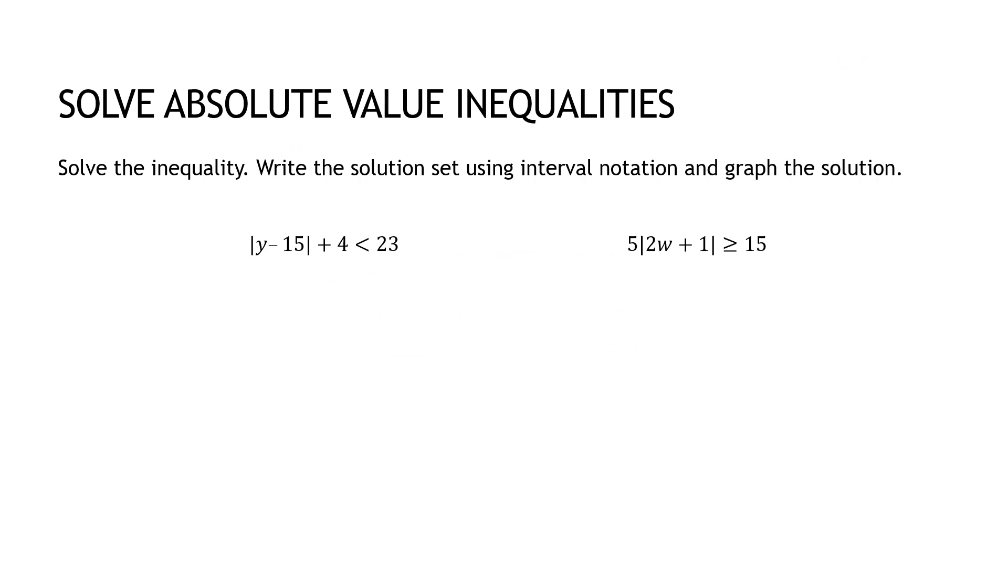So let's take a look at a couple that are obviously a little more difficult than the simple ones we just did. Just as always, I want to get the absolute value by itself before I make any decisions about whether or not there are solutions or if it's an and or an or. So before I even look at that, I'm going to subtract the four from each side and get the absolute value of y minus 15 is less than 19. Now I can look at it and say, okay, this could work.